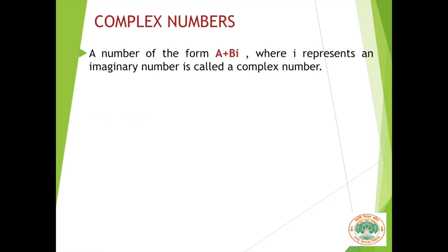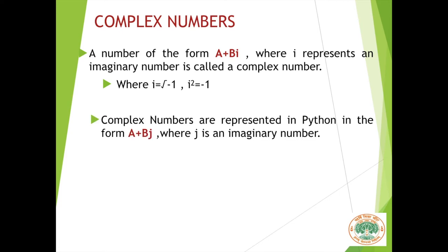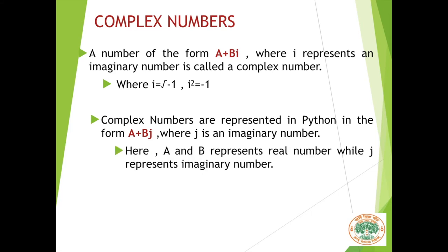Let us go to the next concept which is complex numbers. A number of the form a plus bi, where i represents an imaginary number, is called a complex number. Here i stands for the square root of minus 1, so i squared equals minus 1. In Python, complex numbers are represented by the letter j instead of i. So complex numbers are represented in Python in the form a plus bj, where a and b are real numbers and j is the imaginary number.